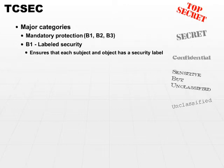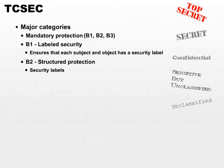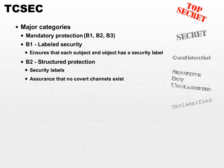Increasing the security even further, we have structured protection. Category B2 must also have labels, but in addition to security labels, must provide assurance that no covert channels exist.